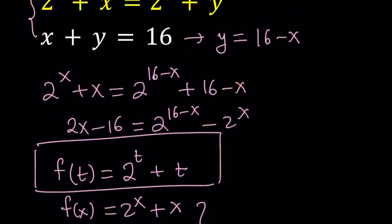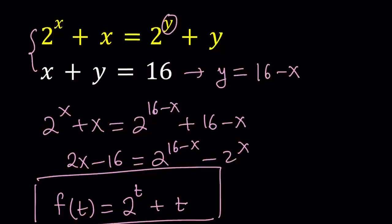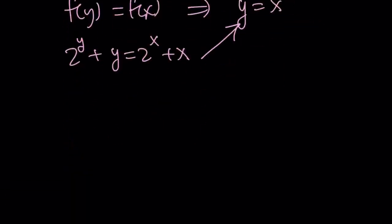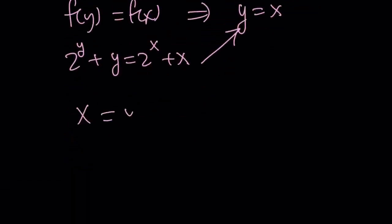Remember, we were given this one, right? 2 to the power x plus x equals 2 to the power y plus y and x plus y equals 16. Now, we're going to replace the first equation with x equals y or y equals x. And the second equation is just x plus y is equal to 16. Now, we have a much simpler system. And how do you solve it? Easy, right?